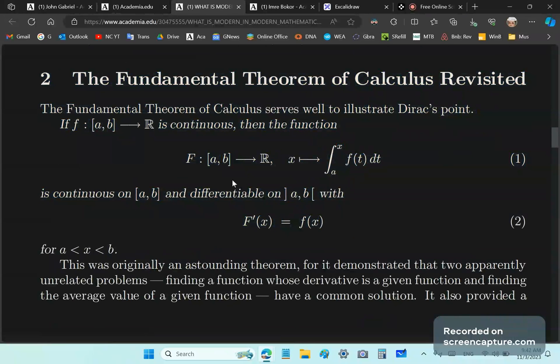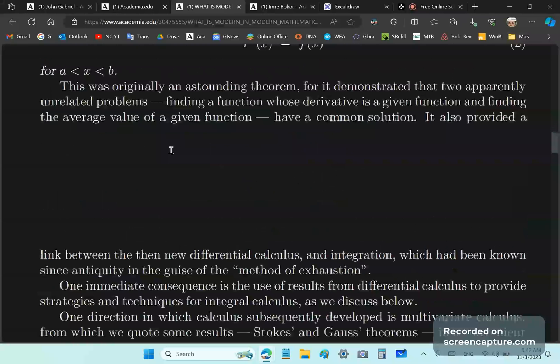This doesn't tell you anything about calculus. It strips away all understanding. She doesn't have any understanding. She says this was originally an astounding theorem. For it demonstrated that two apparently unrelated problems have a common solution. It's actually not the average value. It's the arithmetic mean of the derivative, and they are linked as I've explained in my holy grail of calculus, world-class article, and you should download it. I'll place a link in the details section.